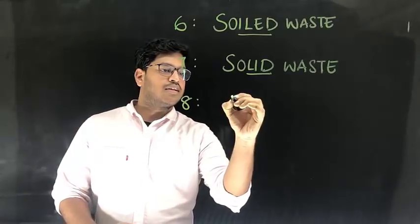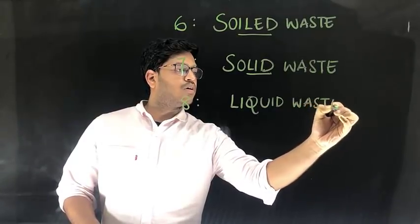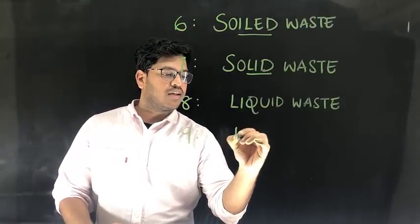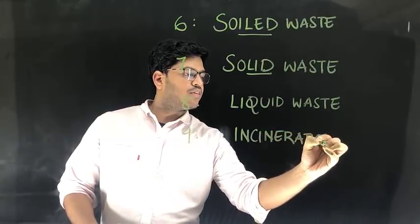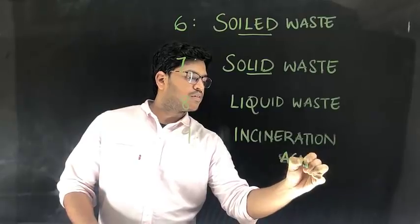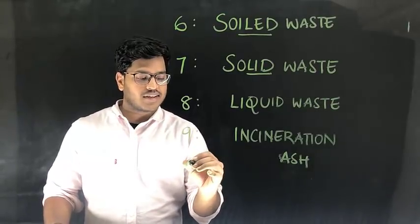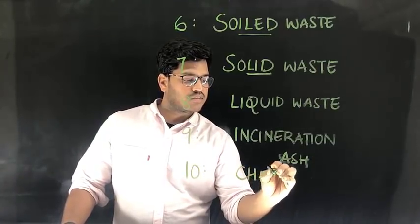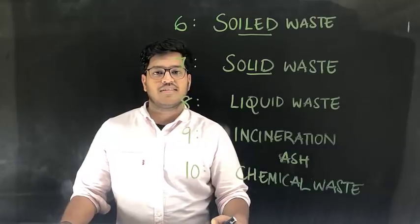Category 8 is liquid waste. Liquid waste includes all the waste from the wash of the laboratories. Category 9 includes incineration ash. Incineration is a high temperature oxidation procedure where you burn the waste. The ash produced from the incineration is also a waste that comes under category 9. Category 10 includes chemical waste, which includes insecticides or pesticides.